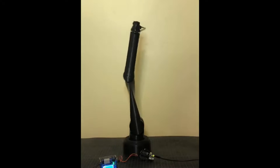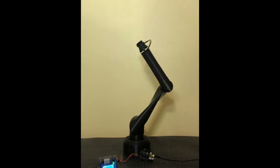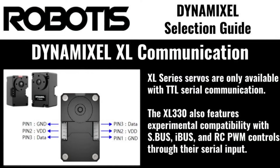Operational voltages for XL series servos range from 5 volts to 11 volts depending on the specific model. XL series motors only support TTL serial communications and can't be integrated into RS-485 systems without the use of a Dynamixel communications bridge.